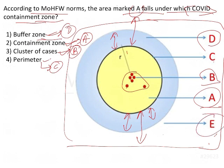Coming to E — behind the buffer zone it is like a safe area. We can consider it a safe area, unless it is covered by other clusters of cases and other circles. So it is considered beyond the buffer zone. To summarize: D is the buffer zone, C is the perimeter, B is the cluster of cases, A is the containment zone, and E is beyond the buffer zone.